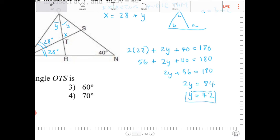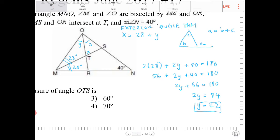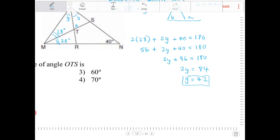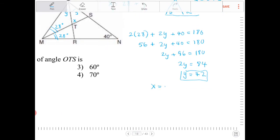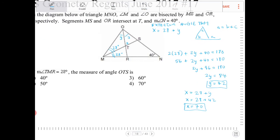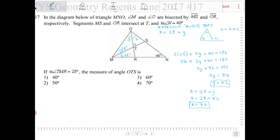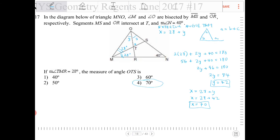And if Y equals 42, then I can solve for what X is. Since X equals 28 plus Y, I can replace Y with 42 and say X equals 28 plus 42. So my final answer comes out to equal 70, X equals 70. So that will give me angle OTS equals 70 degrees and that's option 4.